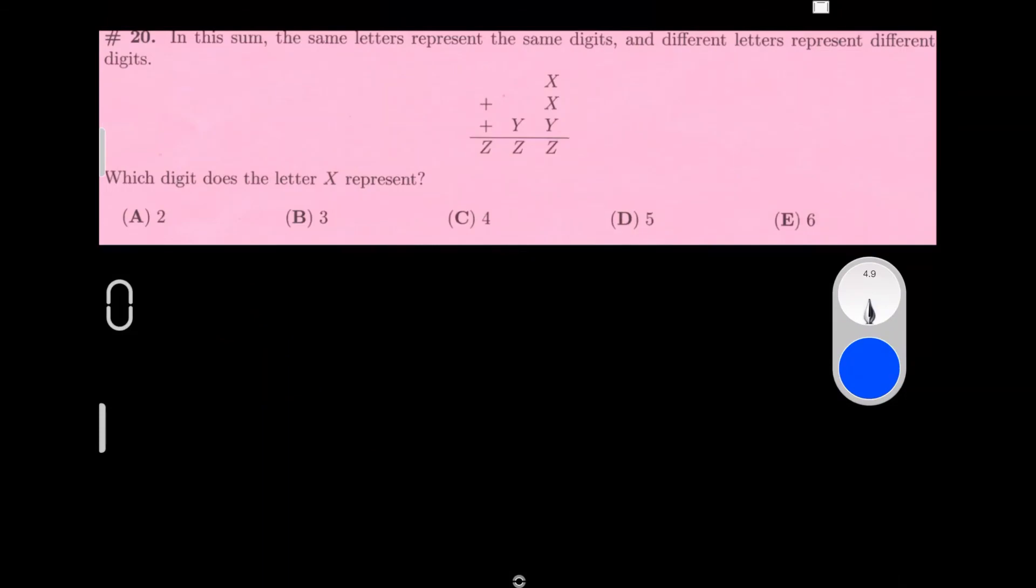The same letters represent the same digits, and different letters represent different digits. Which digit does the letter X represent? Let's see the greatest possibility to give the answer for X, which is 6. Let's use 6 as X for now, and we can go down if it's not right. Let's use the greatest one digit number for Y, which is 9.